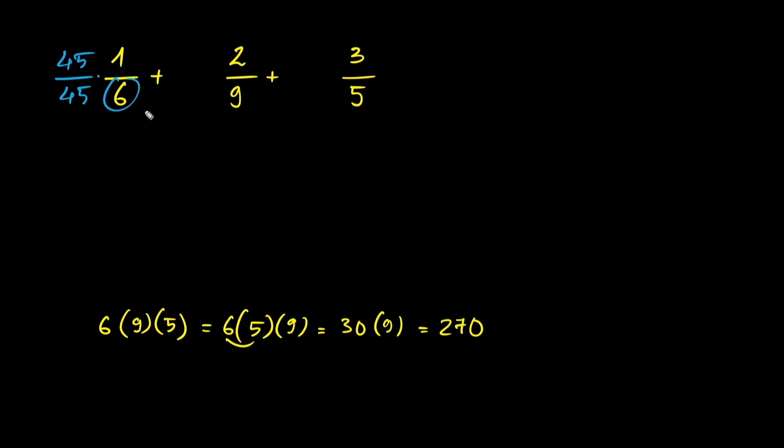For the middle fraction, I'm going to use the denominators of the other two fractions, 6 and 5. So I'm going to multiply by 30 over 30.